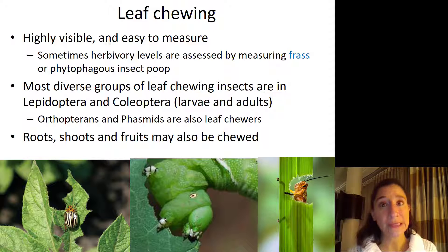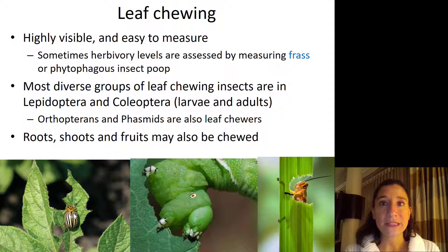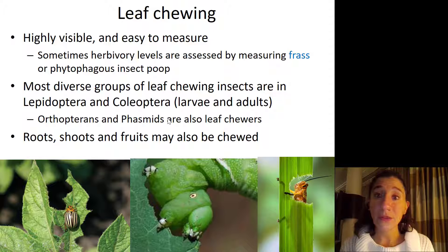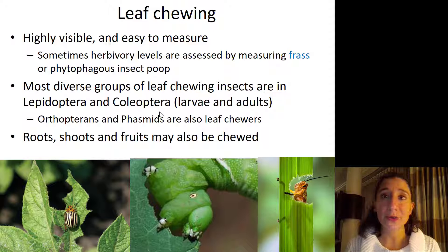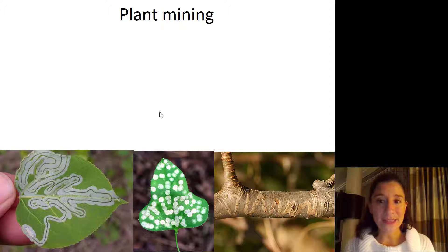In addition to chewing the leaves, chewing insects may also consume the roots, shoots, and fruits of plants and cause substantial damage. Many Lepidoptera and Coleoptera larvae — and in the case of Coleoptera, adults as well — are pests of fruits and the shoots and stems of plants.